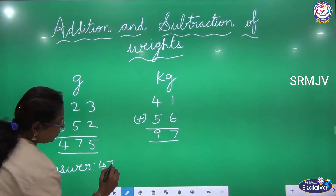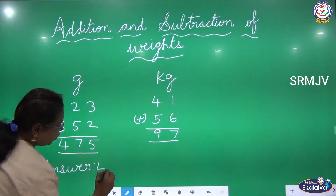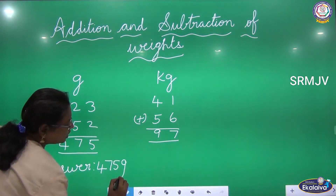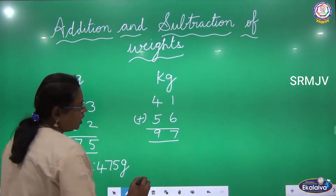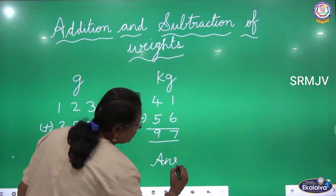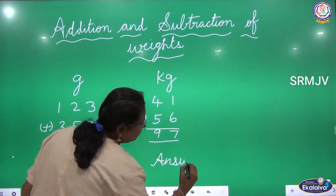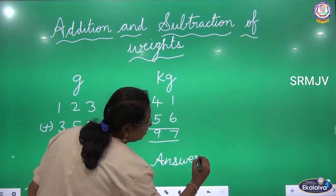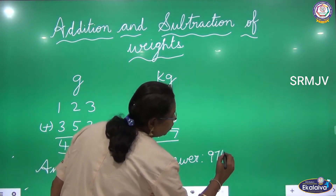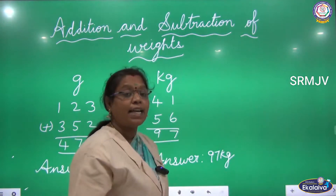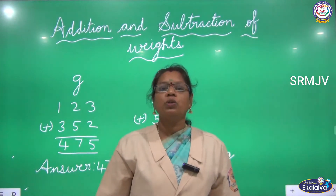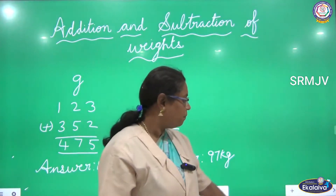So the answer is 475 grams and 97 kilograms. When we are writing the answer we should mention the units.